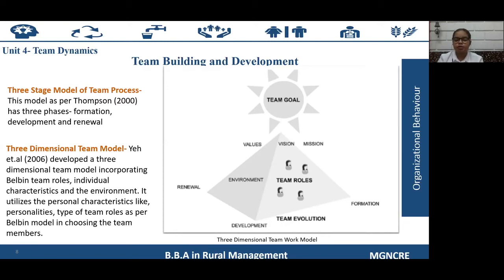The three-dimensional team model was developed in 2006, incorporating Belbin team roles, individual characteristics, and the environment. It uses personal characteristics like personalities, organizational values, mission, and goals to execute teamwork. As per this model, team goals are at the top incorporating the organization's values, mission, and goals. Team roles are in the middle, showing roles of members in relation to the organizational environment. Team evaluation forms the base, incorporating team development by maintaining personal relationships and introducing knowledge and skills to improve member competence.